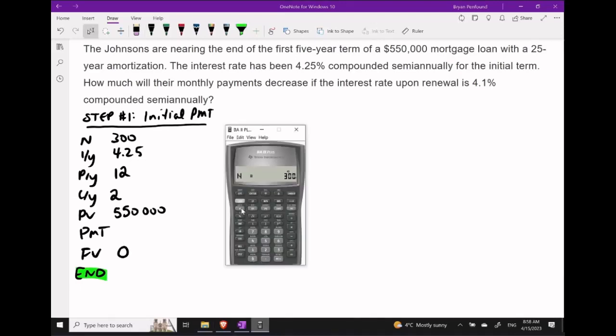Let's pop up the calculator and start programming in some of these values that we need. So here the interest of 4.25. We'll sneak into that sub-menu. PY is 12 already, CY is 2. So that looks good. We're going to quit. Program in our $550,000 for the PV, zero for our future value, and then go ahead and compute the equal-sized payments. And we should get $2,968.13 as that initial payment size.